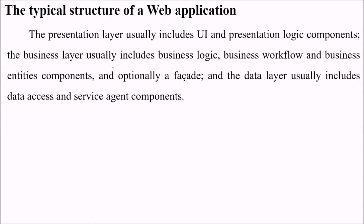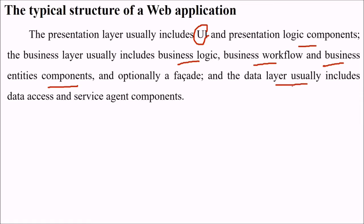In the typical structure of a web application, the presentation layer includes user interface and presentation logic components. The business layer includes business logic, business workflow, business entity components, and optionally a facade. The data layer includes data access components, service agents, and related components.